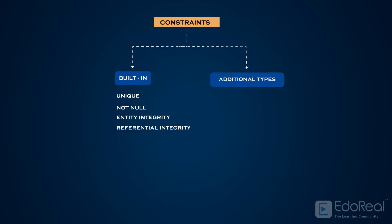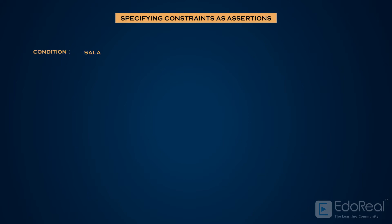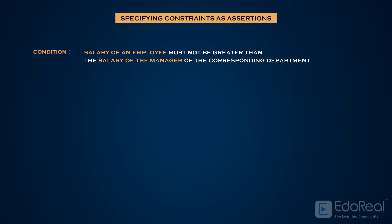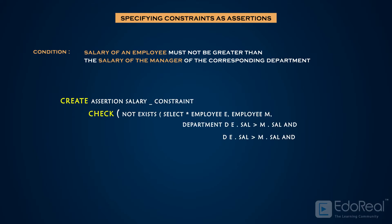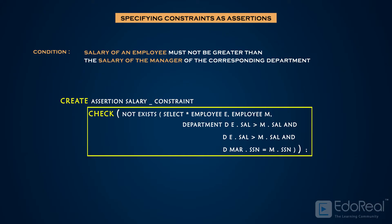Additional types of constraints that are outside the scope of built-in constraints can be specified as assertions. Each assertion is given a constraint name and is specified via a condition. For example, specifying a constraint that the salary of an employee must not be greater than the salary of the manager of the corresponding department. By using the CREATE ASSERTION command, we can specify the constraint as an assertion. Here, the salary constraint is the name of the constraint and the CHECK clause contains the condition of the constraint.